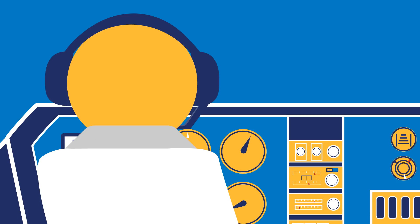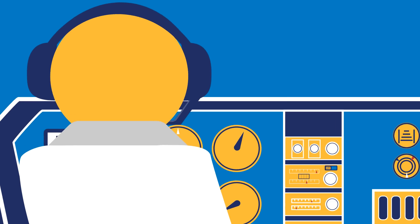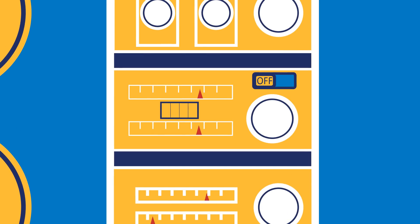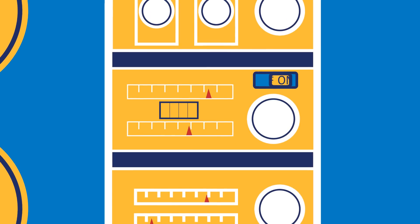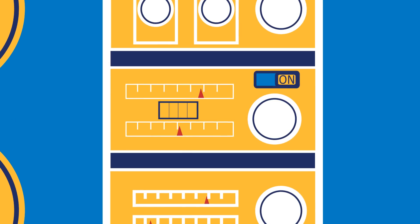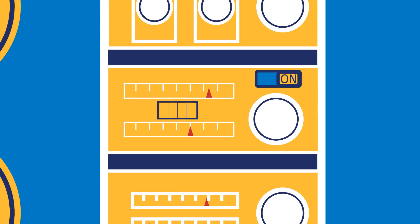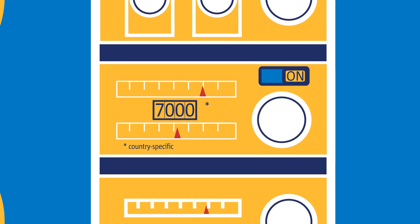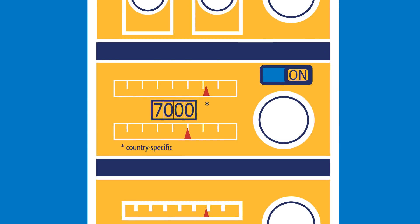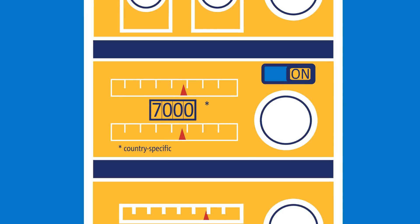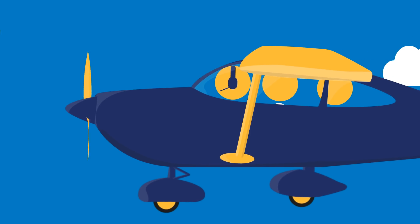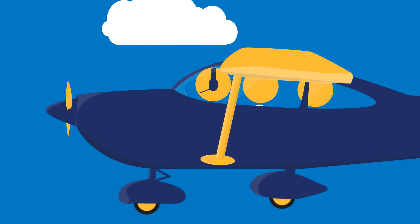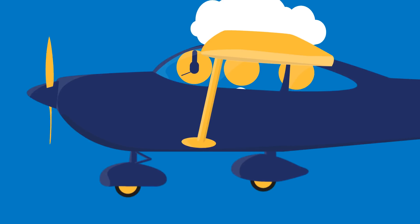In flight, use Flight Information Service as much as possible. Turn on your transponder. The default code is 7000 for VFR flights, except if another default code is used in your country. Set it before the flight. During the flight, Flight Information Service could provide you with another code.